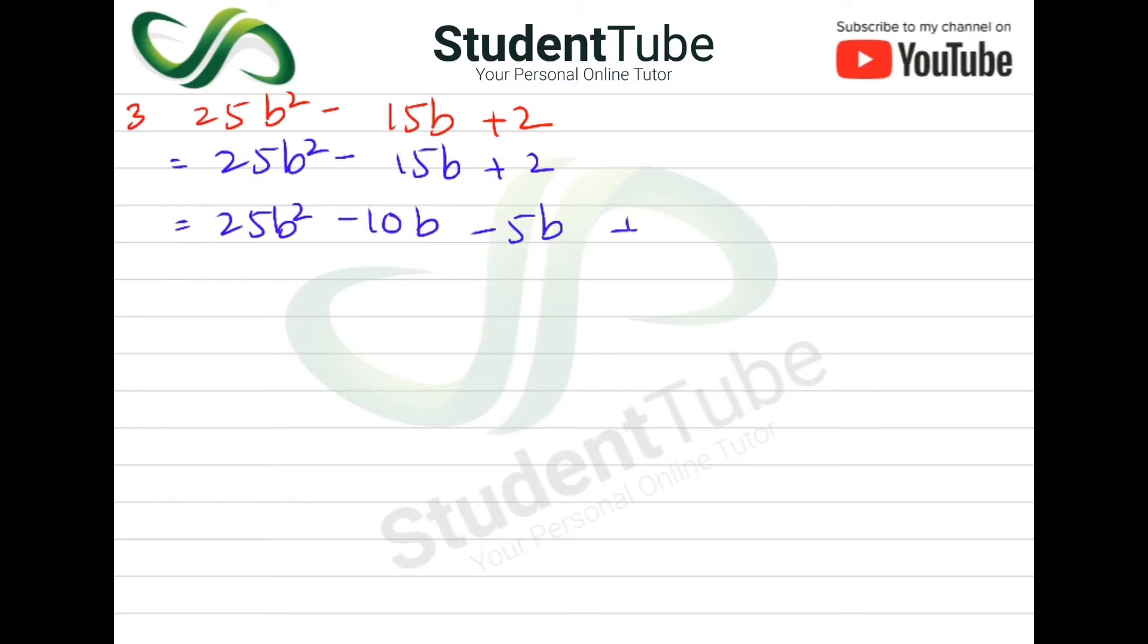Now we have to take 5b common. So 5 times 5 is 25, and 1b is outside. There are 2 on top means 1 will come, then minus, 5 times 2 is 10b because b is outside.